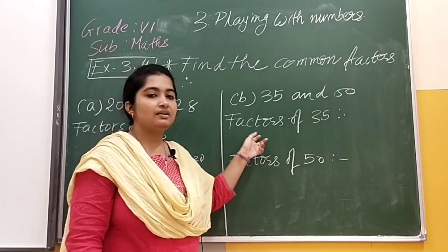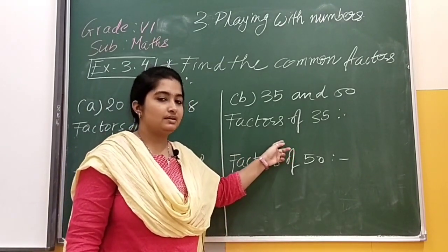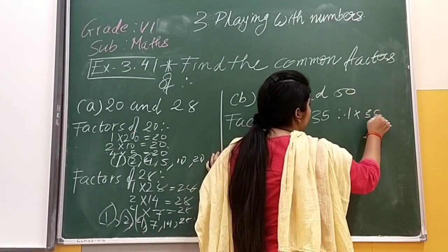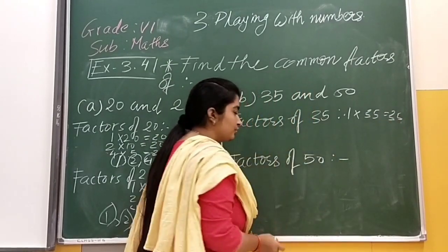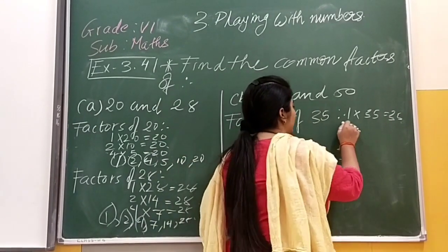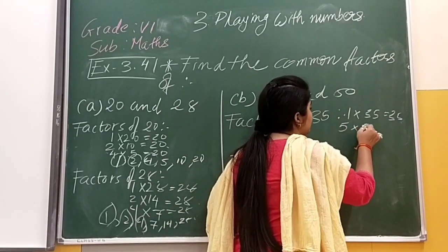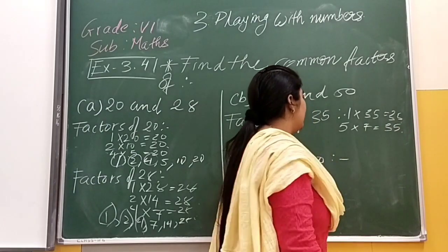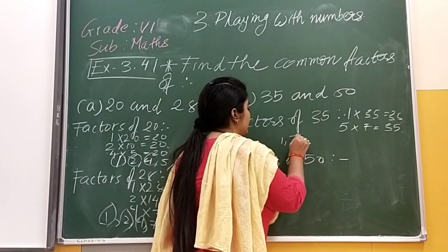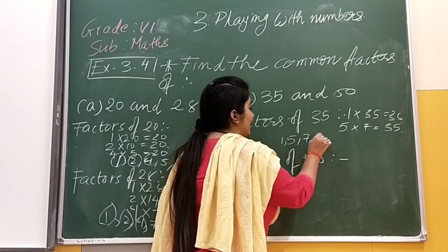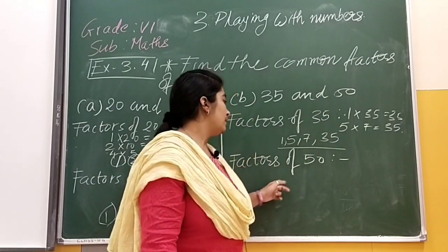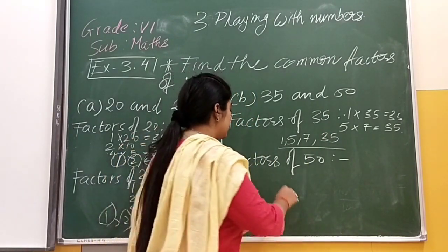Here we have a second question. That is 35 and 50. First one is 35. 35 are factors. Now, let us see the factors. Now, let us see the factors. Now, let us see the factors.